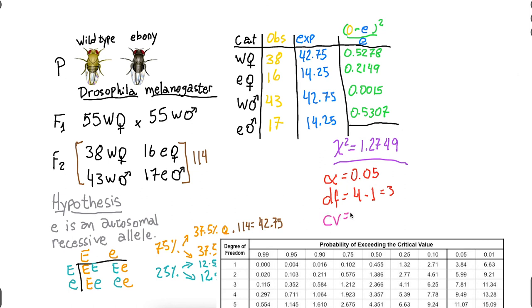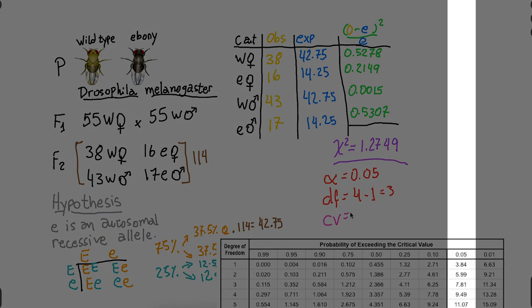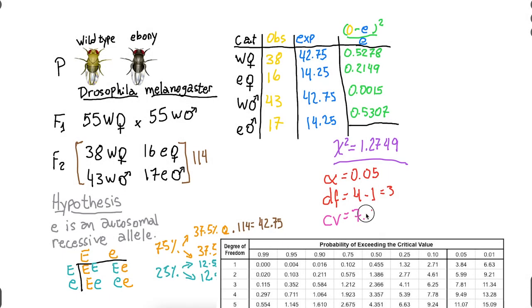So we look at the table, and you see that the critical value for alpha 0.05 and 3 degrees of freedom is 7.81. And then I have to compare. Is my chi-square larger than the critical value? No, it is not. My chi-square value is smaller than the critical value. That means I do not reject the hypothesis. It seems that E is really an autosomal recessive allele, and we have the demonstration right here.